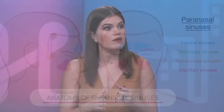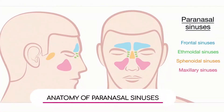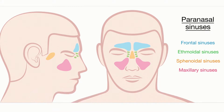Can you start by giving us a rundown of the four types of sinuses that we have? There are four anatomical sinuses. As we see on this graphic, we have the frontal sinus, which is basically in your forehead. We have the maxillary, which is underneath your eyeballs. In between your eyes, you have the ethmoidal sinuses, and posteriorly we have the sphenoid sinus, which is all the way in the back of your head.